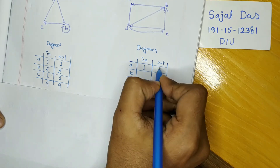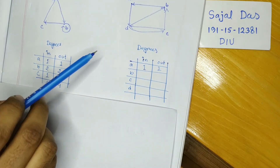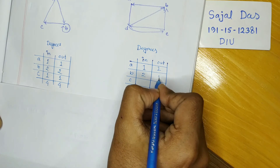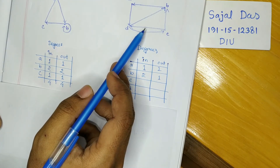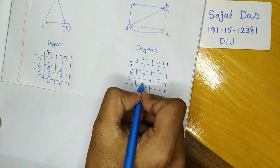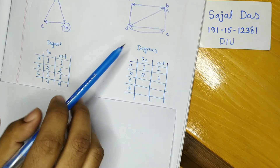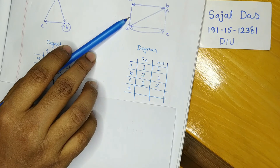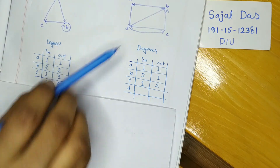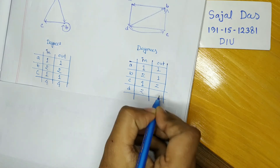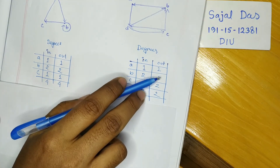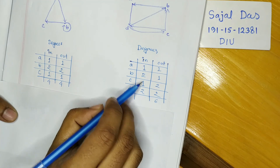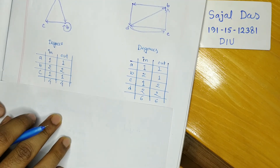For the second directed graph: vertex a has 1 in and 1 out. Vertex b has 2 in and 1 out. Vertex c has 1 in and 2 out. Vertex d has 2 in and 2 out. Totaling these: the sum of in-degrees is 6 and the sum of out-degrees is also 6.